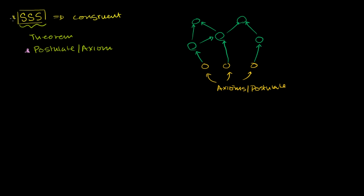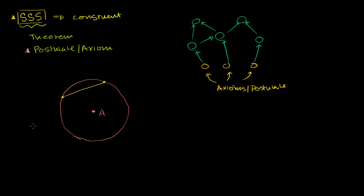With that out of the way, we're going to assume going forward that we just know this is true — we'll take it as a given. I want to show you that we can already do something pretty useful with it. Let's say that we have a circle with a center at point A. Let's say that we have a chord in this circle that is not a diameter. And I have a line — actually a radius, going from the center to the edge of the circle — that bisects this chord.